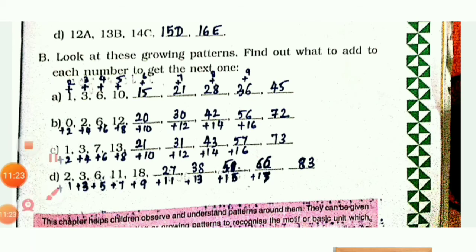So: 1 + 2 = 3, 3 + 3 = 6, 6 + 4 = 10, 10 + 5 = 15, 15 + 6 = 21, 21 + 7 = 28. The number being added is increasing by 1 each time.